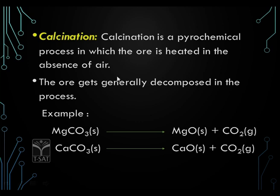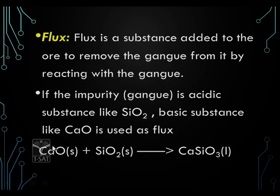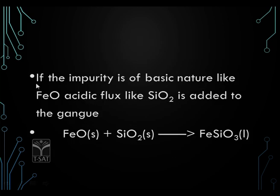Calcination is also a pyrochemical process in which the ore is heated in the absence of air. For example, magnesium carbonate when heated releases carbon dioxide and forms magnesium oxide. Calcium carbonate on heating in the absence of air forms calcium oxide and carbon dioxide. Calcium oxide then reacts with silica to form calcium silicate. Flux is the substance added to the ore to remove the gang. If the impurity is acidic you add a basic flux; if the impurity is basic in nature, an acidic flux like silica is added. For example, iron oxide combines with silica to form iron silicate.